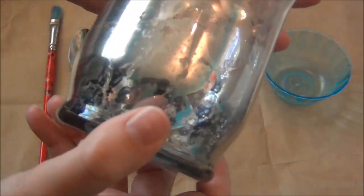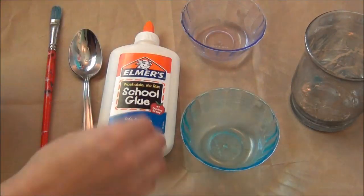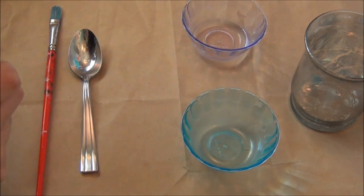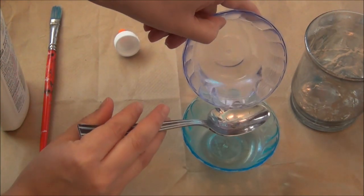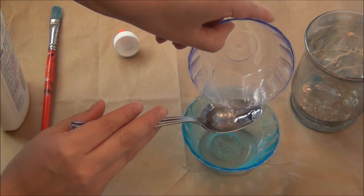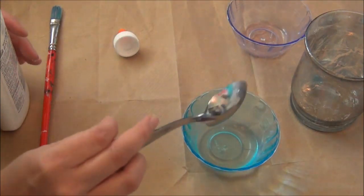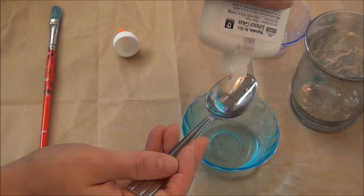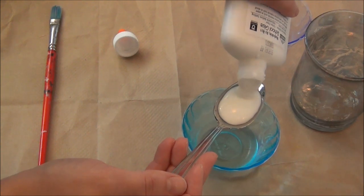Once your mercury glass is dried completely, this is where the fun part starts. In your empty mixing container you're going to add two parts water. So in this case that's two of my tablespoons of the water, and roughly three parts white glue.